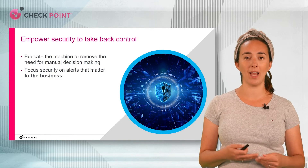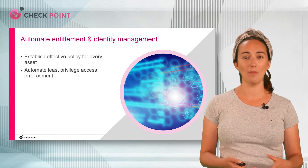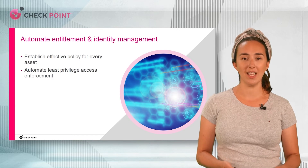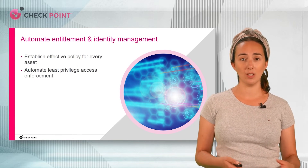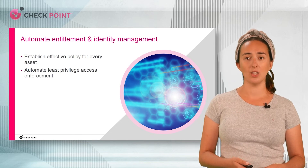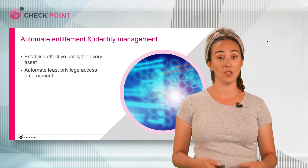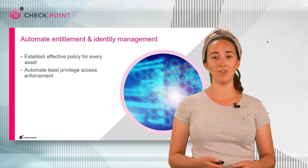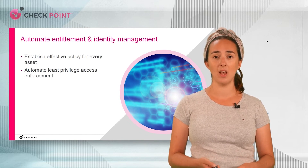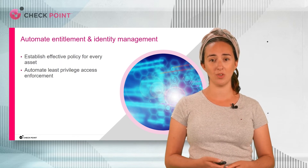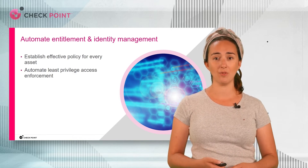Empowered by AI, security teams can be absolutely confident in the order in which they address security risks. Entitlements, as we mentioned, are a black box or black hole for security groups. It's impossible to establish the effective security policy for any user or asset because some policies are applied at the group level and some directly on the asset. It's critical to find a solution that automatically identifies the effective security policy for every asset, so the security team can instantly understand the level of exposure. That's why a zero trust approach and automatic enforcement of least privileged access are so important.